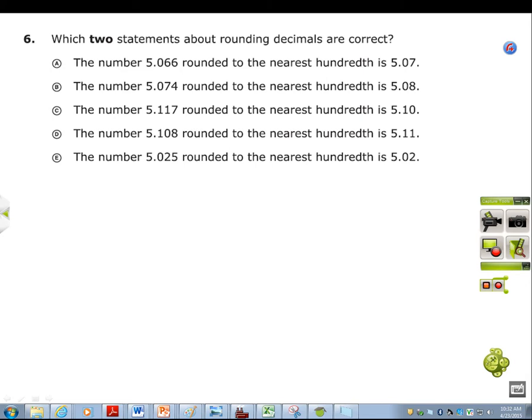Option A is the number 5.066 rounded to the nearest hundredth is five and seven hundredths, 5.07.